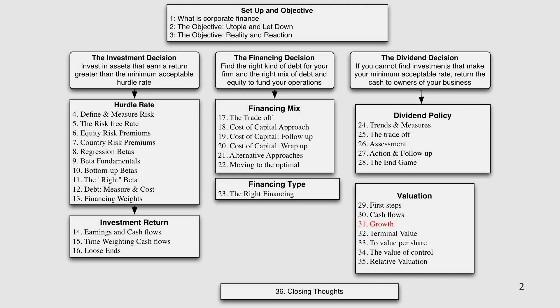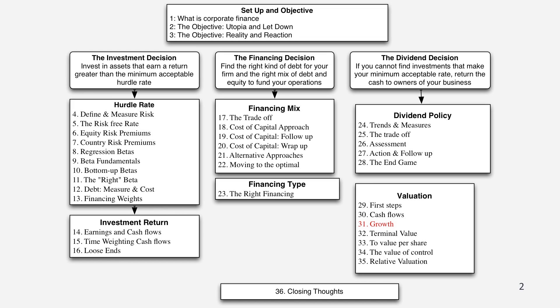In the larger picture, here's where we are. We set the building blocks for valuation in the first session. We talked about cash flows and discount rates in the last one, and we're going to build on growth in this one. Let's think about estimating growth for a company, starting with the two most common ways people estimate growth. The first is to look at the past — historical growth — and that's a logical place to start.